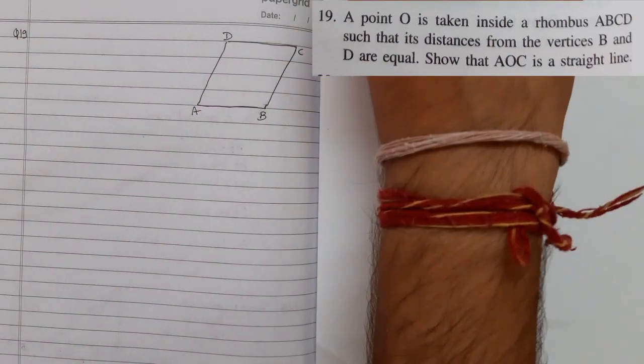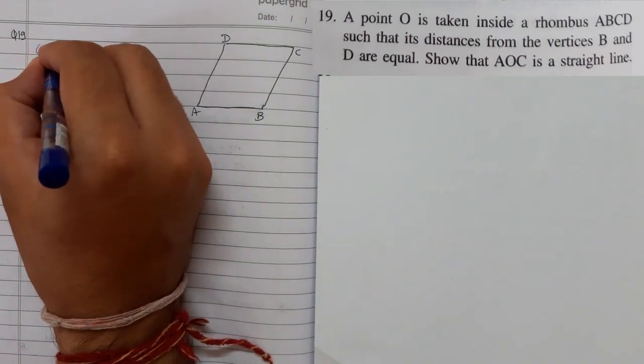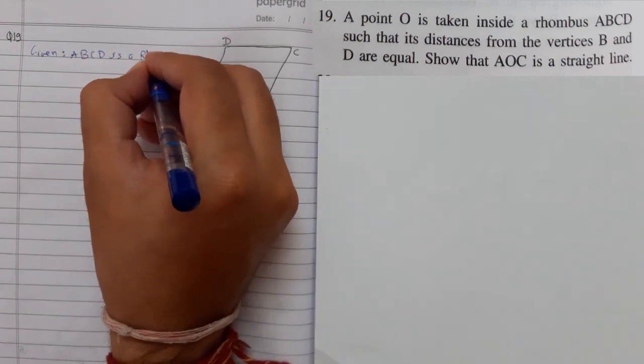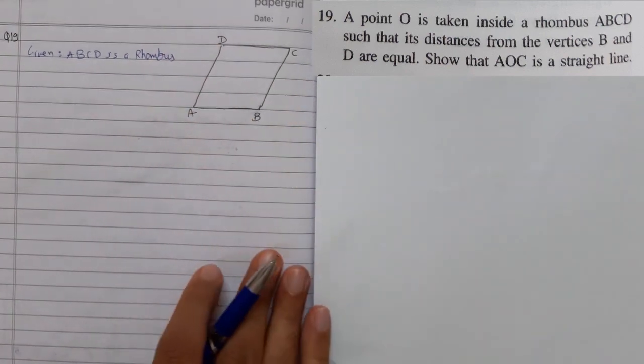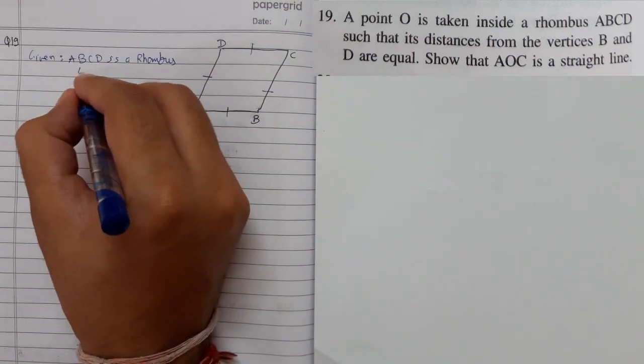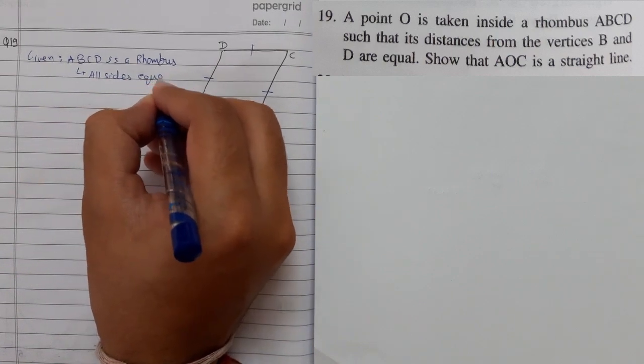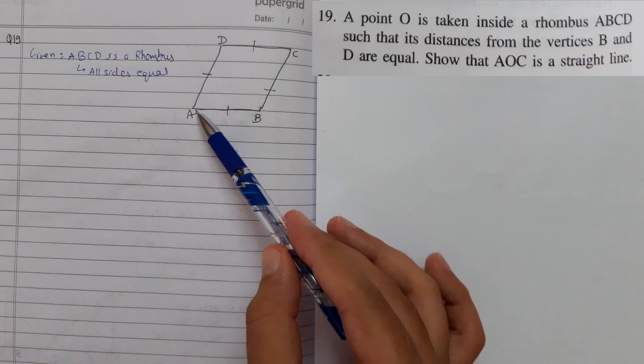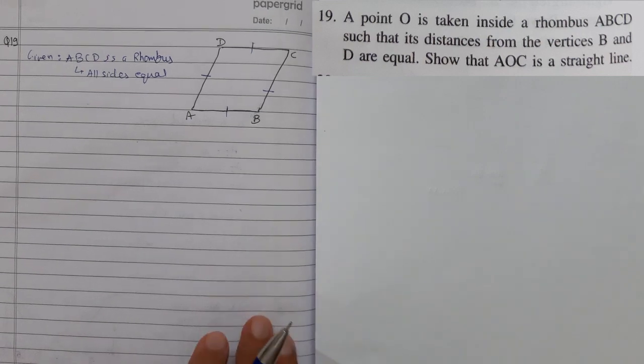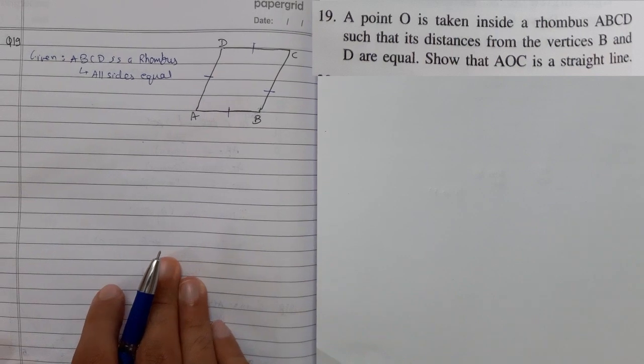For now it's a rhombus. ABCD is a rhombus, the given thing. So when ABCD is a rhombus first thing is all sides are equal. I am just telling you one by one: opposite angles equal. The diagonals bisect each other and are perpendicular to each other. So one thing is given that it is a rhombus.